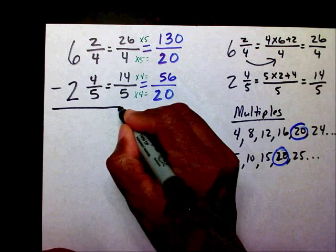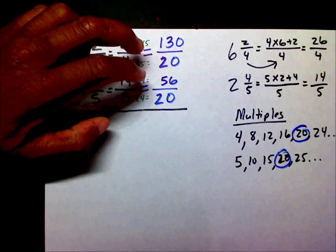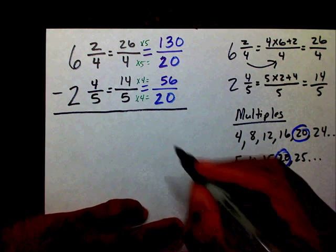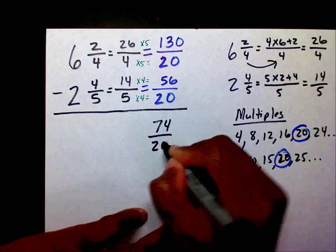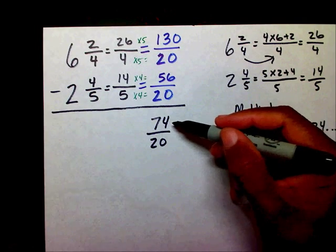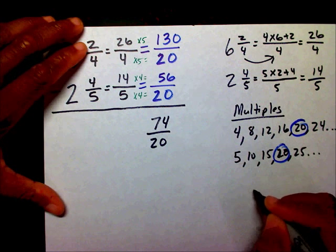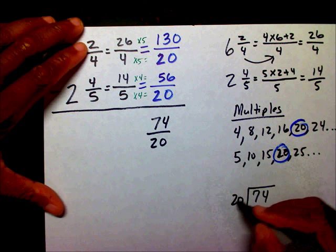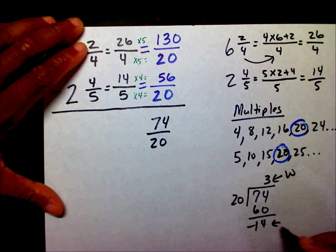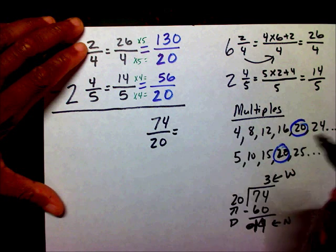Now that my denominators are the same, I'm going to subtract my numerators. 130 minus 56 is going to give me 74 over 20. This is an improper fraction because the numerator is larger than the denominator. So 74 divided by 20: 20 goes into 74 three times — 3 times 20 is 60 — so that gives me 14 remainder. My whole number is 3, my numerator is 14, my denominator is 20 — so this equals 3 and 14 twentieths.